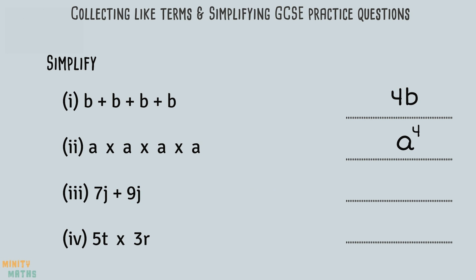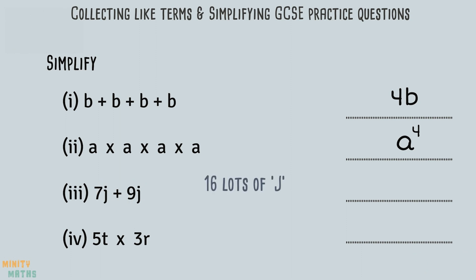For question three we are asked to simplify 7j + 9j. These terms are the same because the variables are both j, so we can simply add them together. We have seven lots of j plus nine lots of j, so in total we have 16 lots of j. We can write this as 16j in its simplest form.